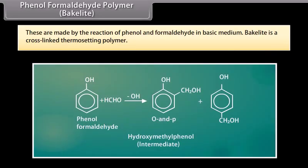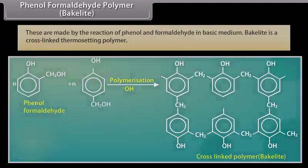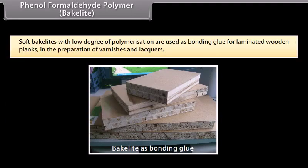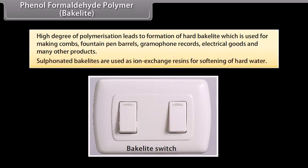Phenol formaldehyde polymer (Bakelite) is made by the reaction of phenol and formaldehyde in basic medium. Bakelite is a cross-linked thermosetting polymer. Soft bakelites with low degree of polymerization are used as bonding glue for laminated wooden planks and in preparation of varnishes and lacquers. High degree of polymerization produces hard bakelite used for making combs, fountain pen barrels, gramophone records, electrical goods and other products. Sulphonated bakelites are used as ion exchange resins for softening of hard water.